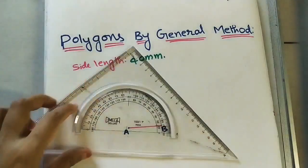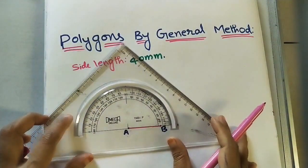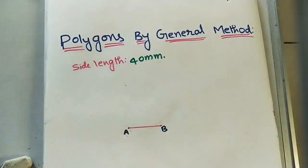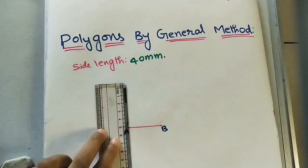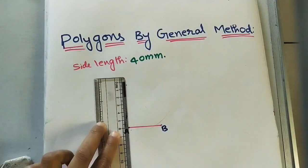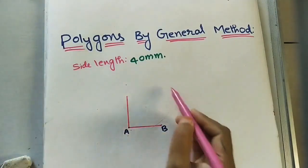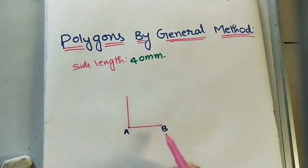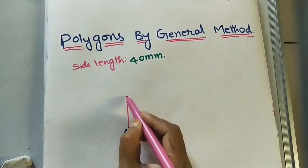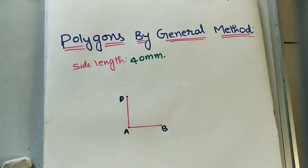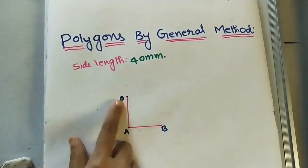After that, draw a perpendicular line at point A — perpendicular means a 90-degree line. The adjacent side of the polygon is also four centimeters. I am marking the alphabets anti-clockwise: A, B, and this new point is marked as D. So we have built two adjacent sides of the square.